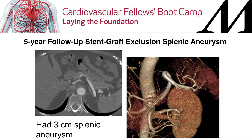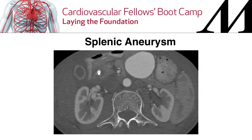Another way to try and preserve the splenic artery is to put in a covered stent graft. This patient had her splenic artery aneurysm, which was greater than 3 centimeters at the time, excluded with a covered stent graft — this is a five-year follow-up CT. You can see the challenge of splenic artery aneurysm intervention is the tortuosity, and navigating a sheath into the tortuous splenic artery can be challenging, but it is possible. This patient had successful stent graft placement.